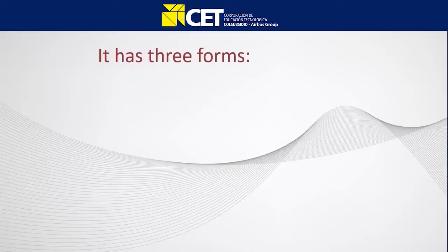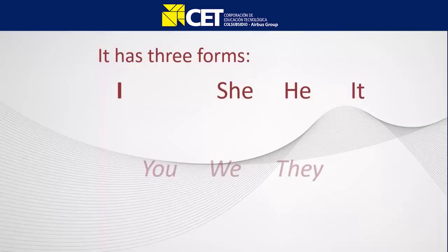Verb to be has three forms: one for I, another one for she, he, and it, and another one for you, we, and they.